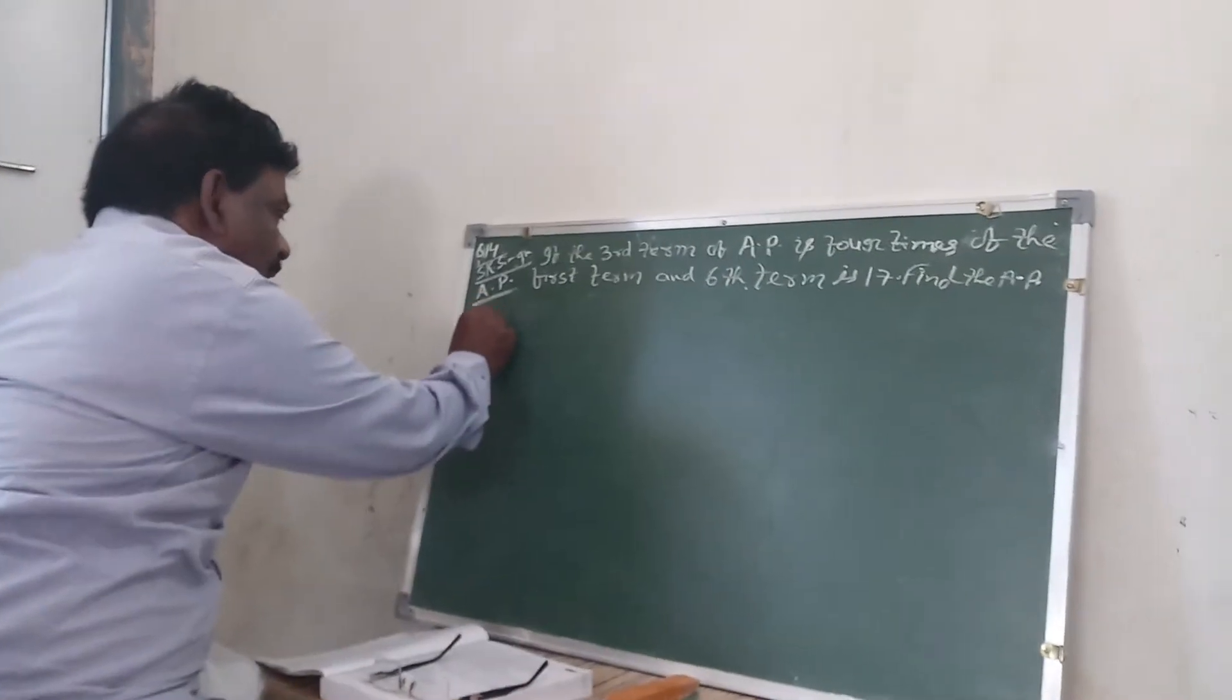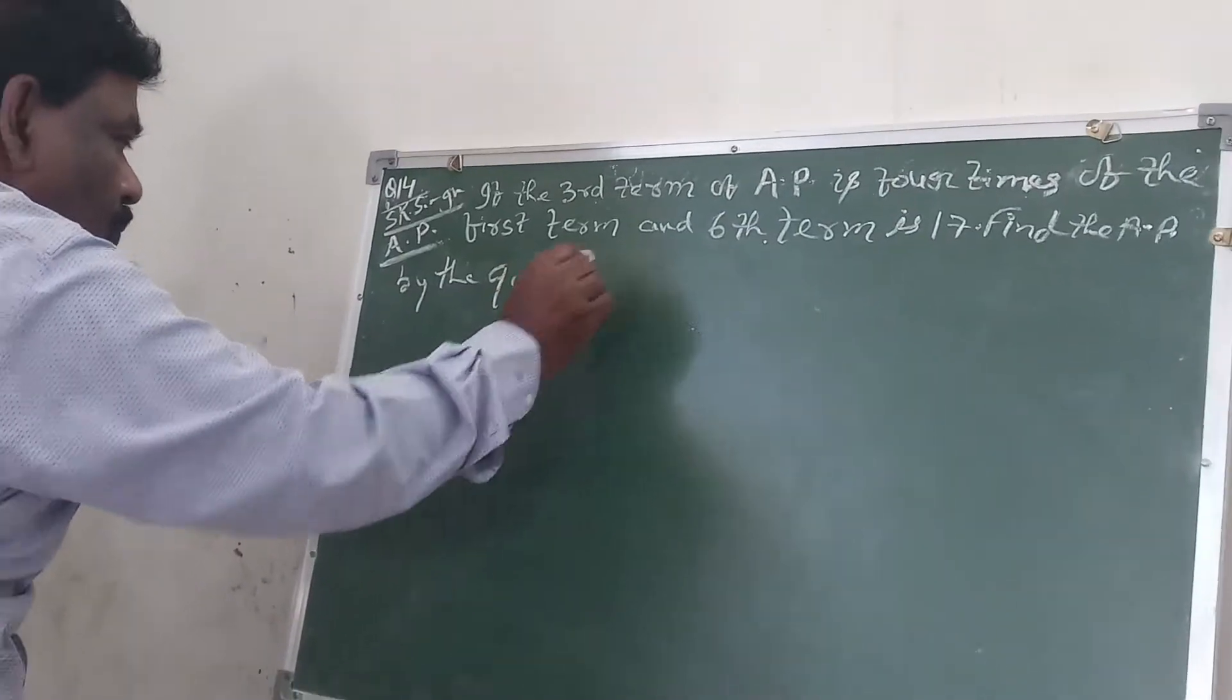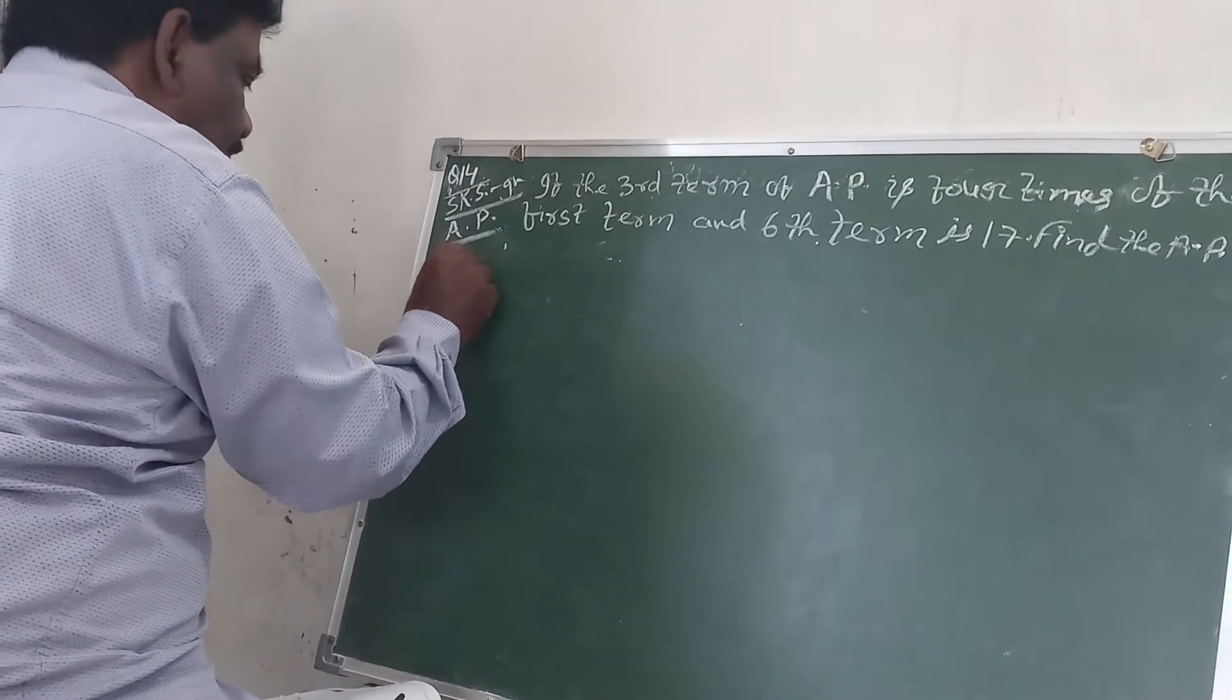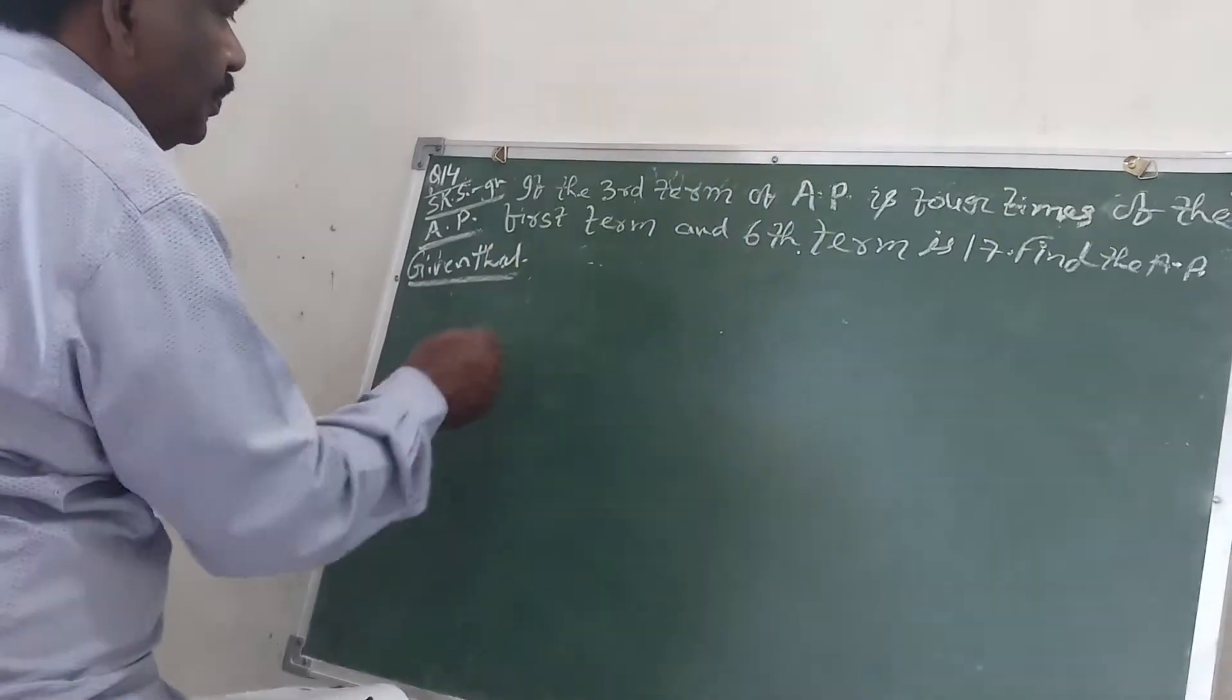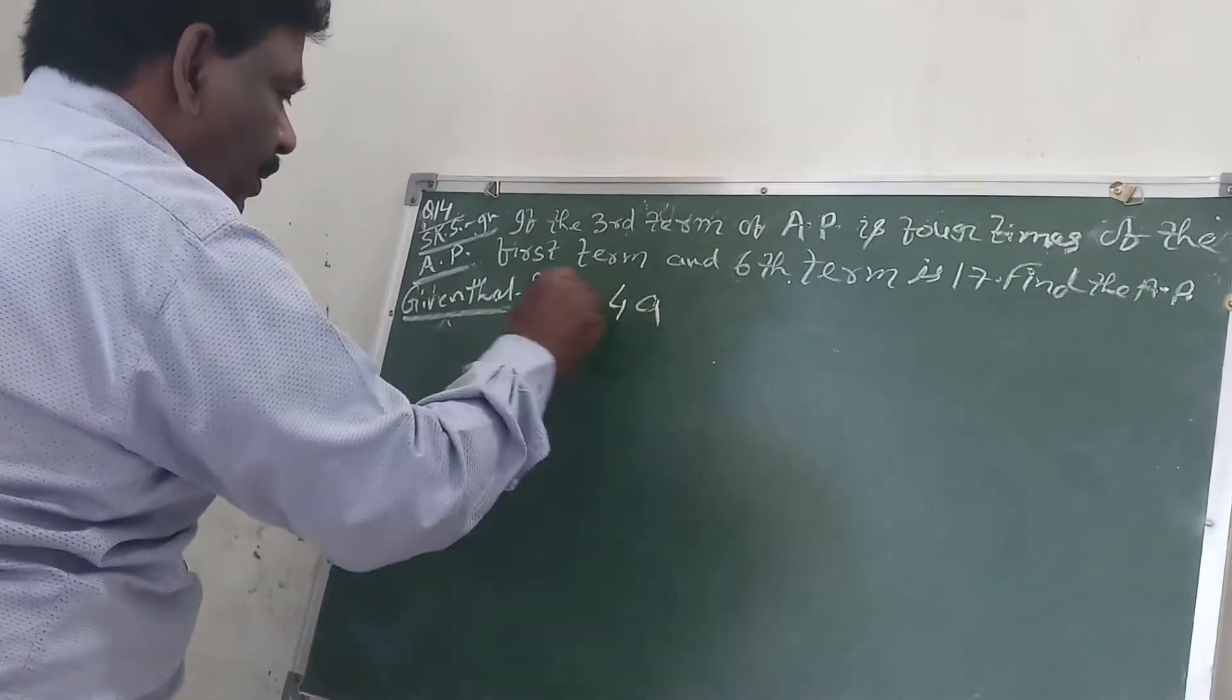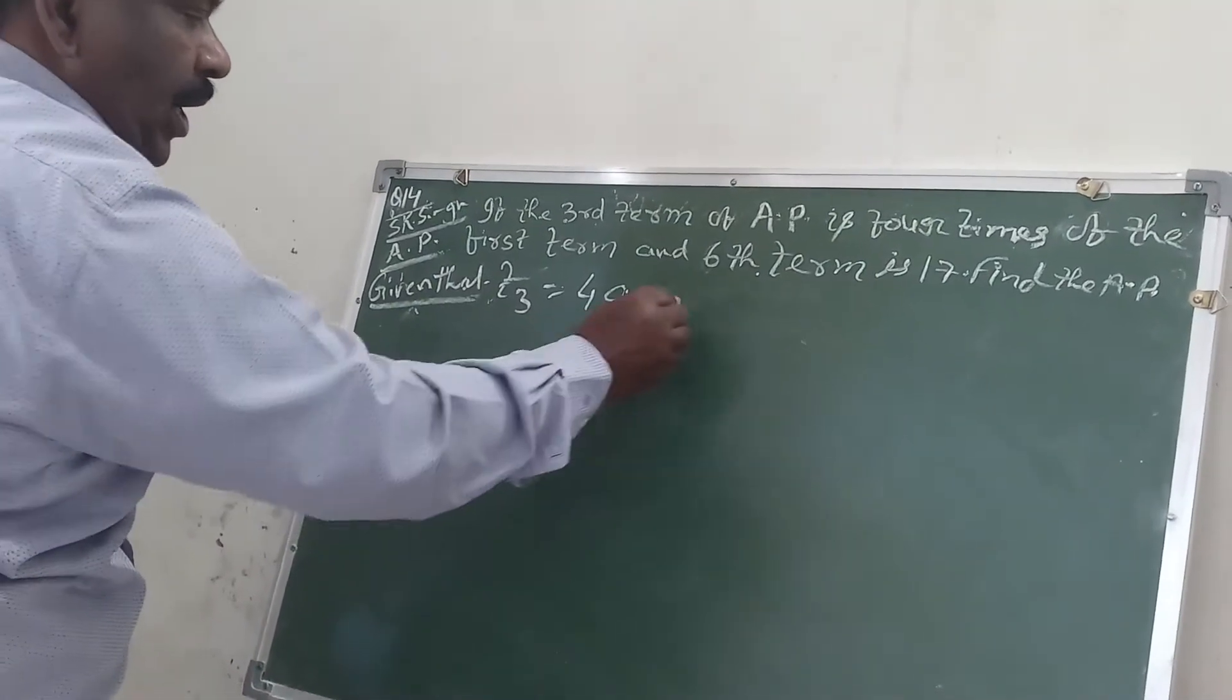Now, by the given portion, given that T3 equals 4A. The third term of AP is 4 times of the first term, so T3 equals 4A.